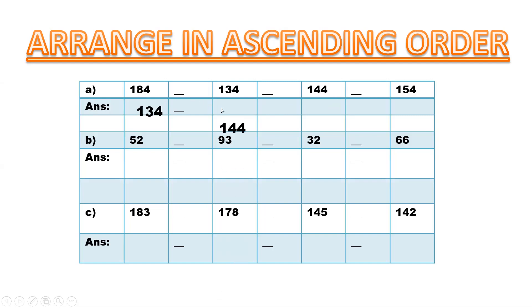Understand? So the answer is 134, then 144, then 154, then 184. Always leave one column after each answer. Did you understand?